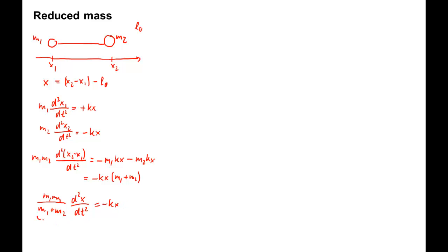Let's abbreviate this pre-factor and call it mu. Another way to write this is 1 over mu equals 1 over m1 plus 1 over m2. This pre-factor mu is called the reduced mass.